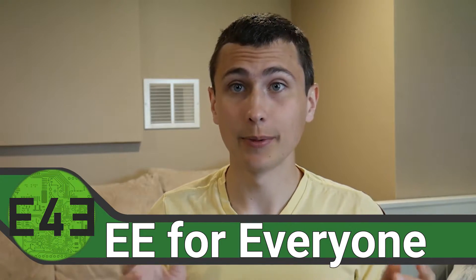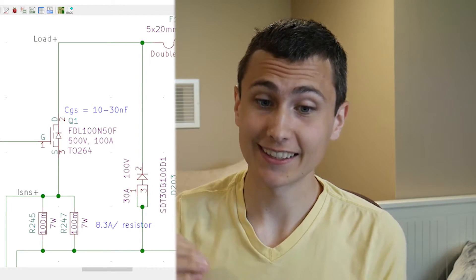Today we are going to design the overcurrent protection for the electronic load project. This circuit is responsible for keeping the load within its limits, meaning the transistor on the output, even during fault conditions. It's also responsible for making sure we keep our FET within that safe operating area, and it's going to be burning up to 300 watts most of the time. That sounds important. Let's dive in.